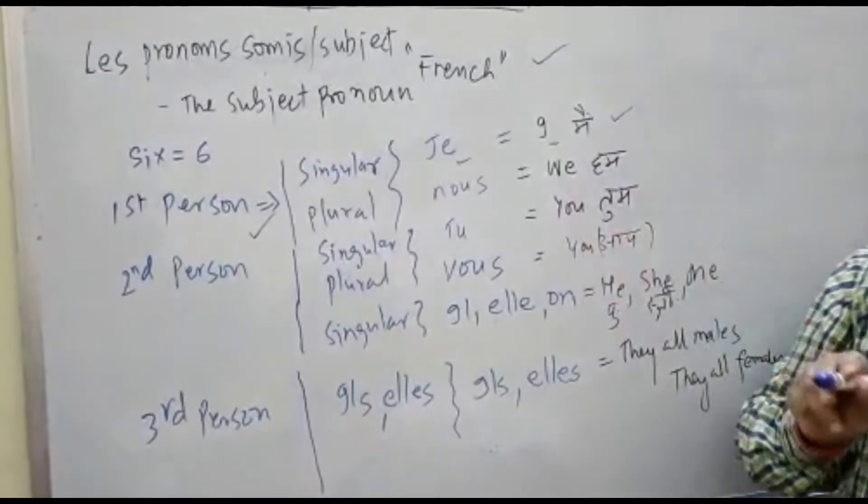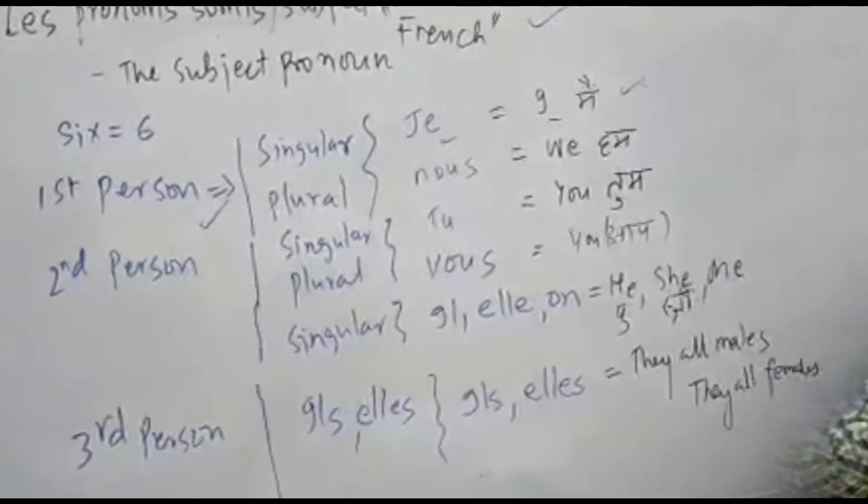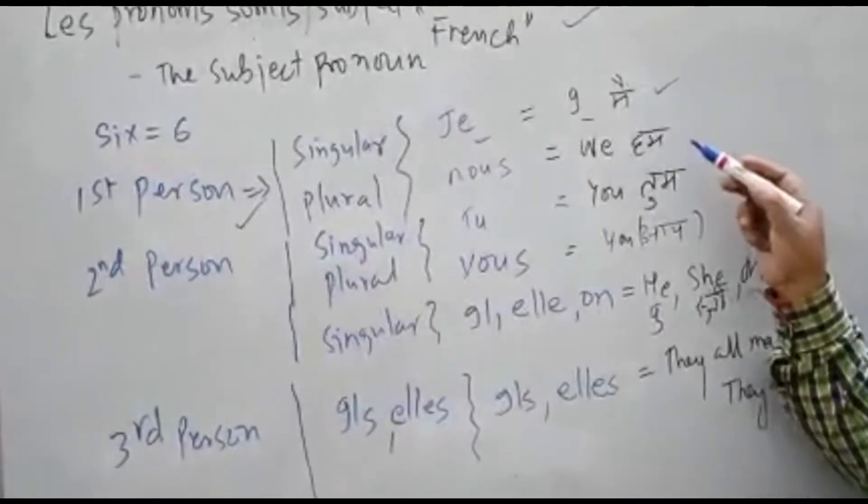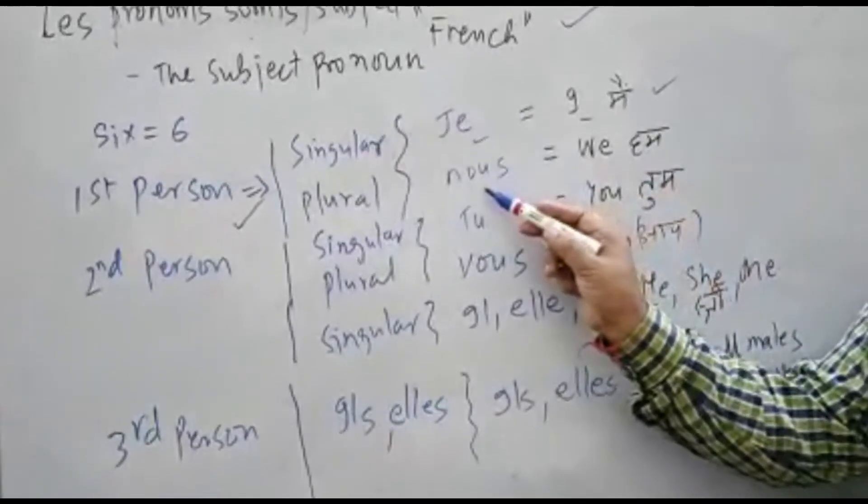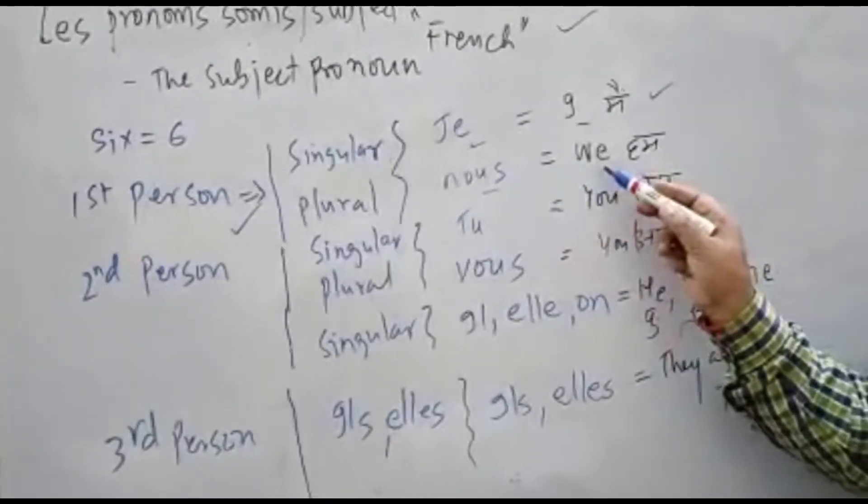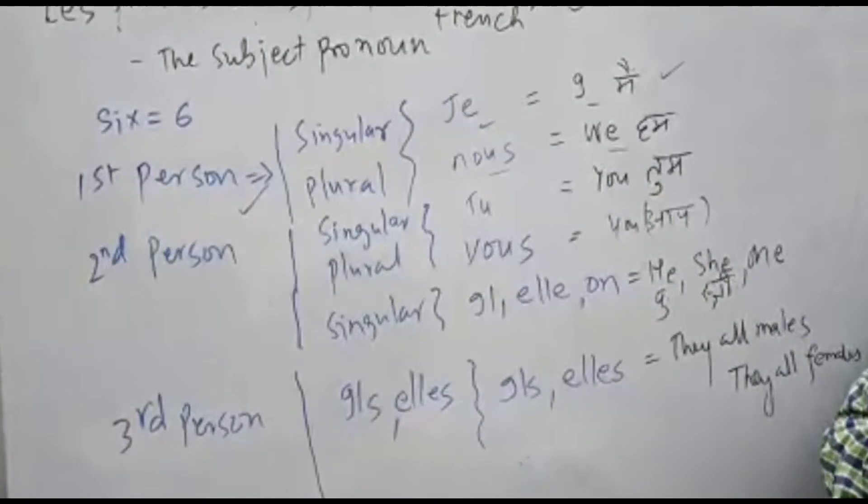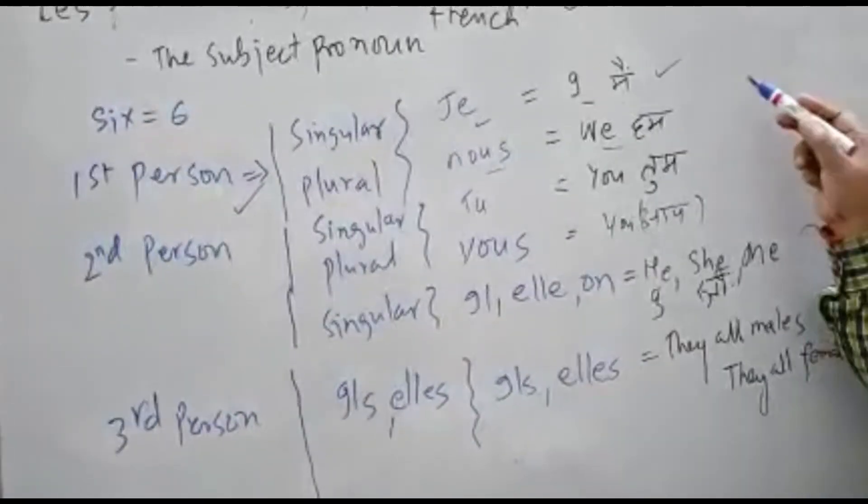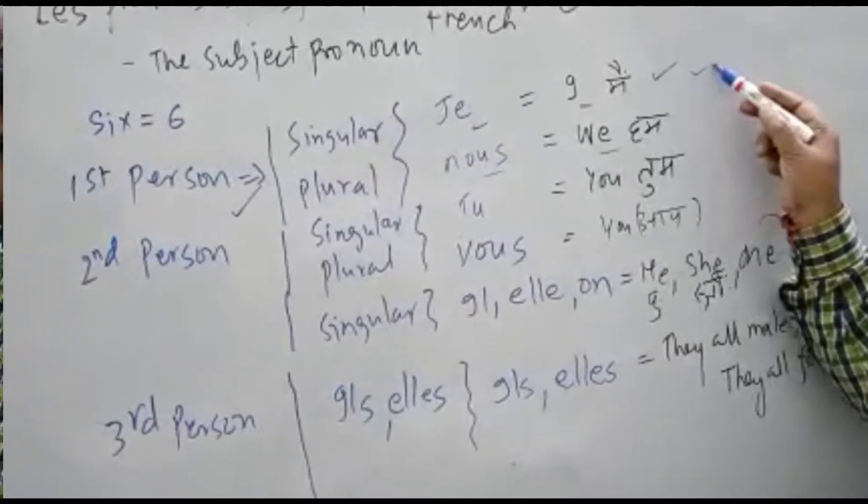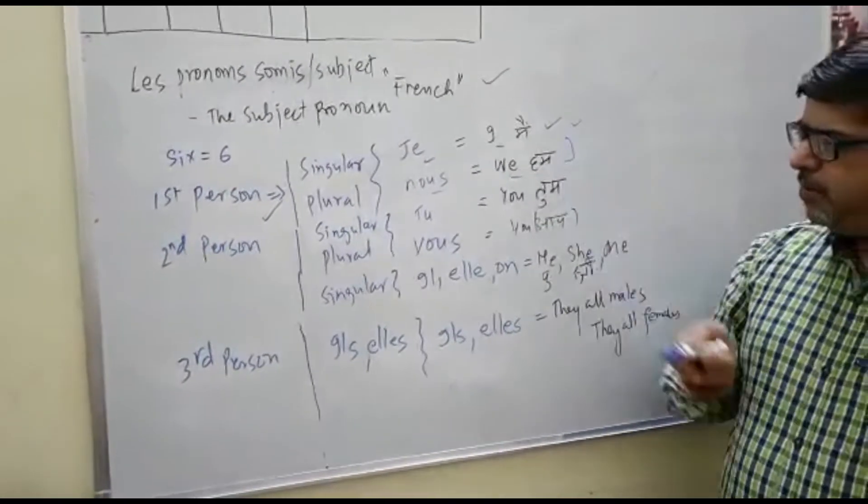Then we'll talk about the plural person, that is called we. It's called nous. It's about first person plural. It's the association of I, that is called nous or we.